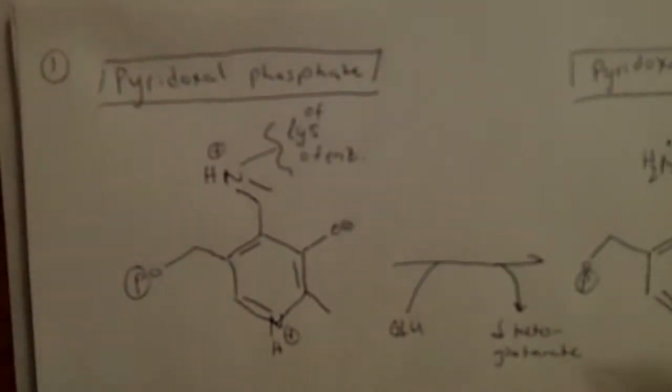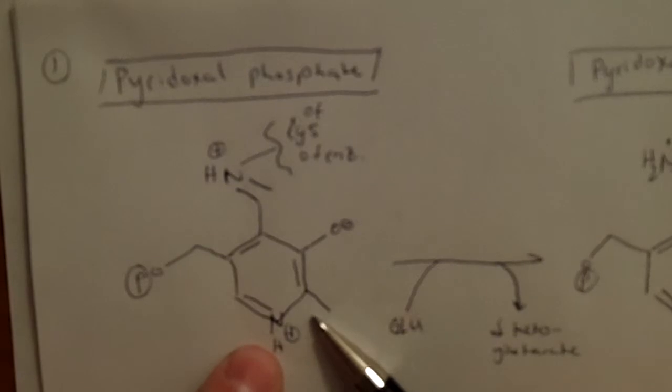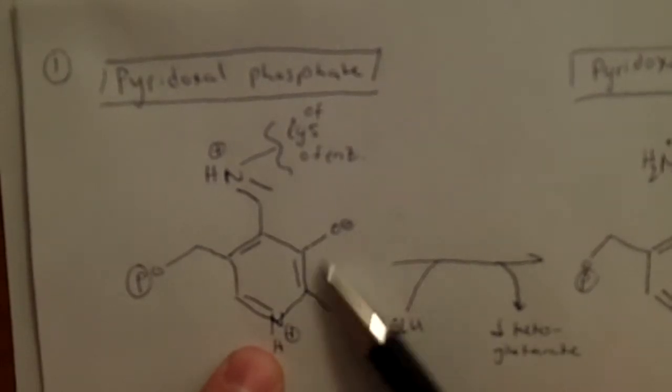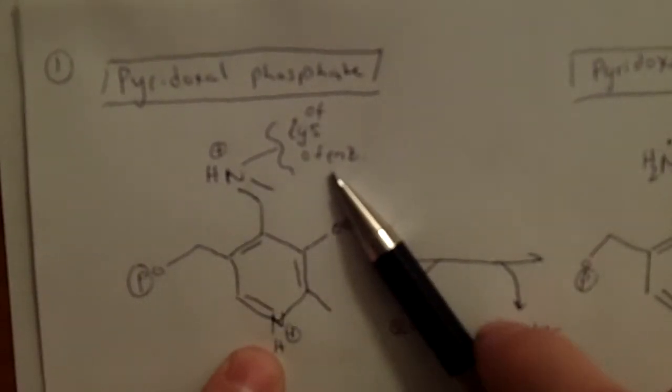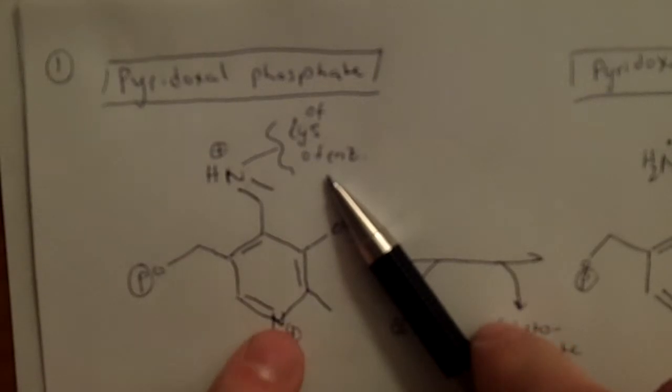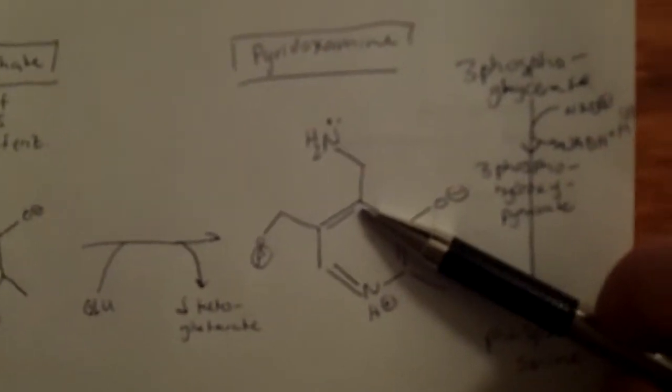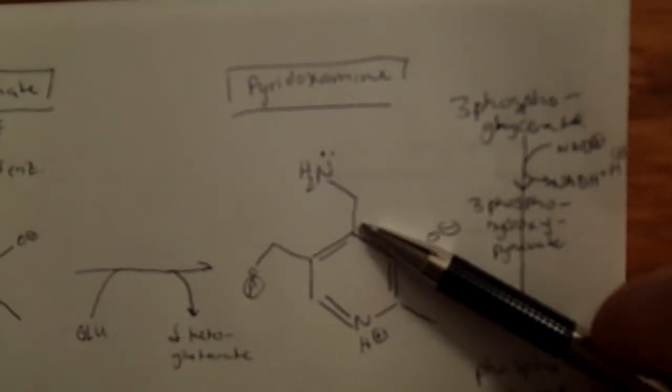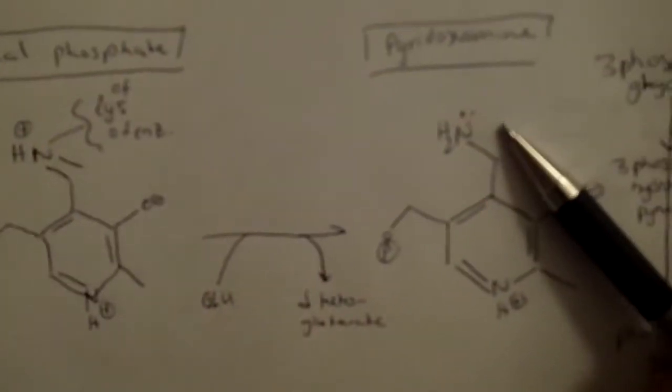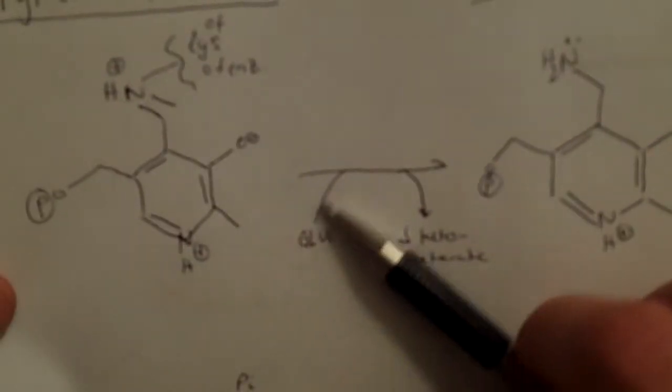The amination is done with pyridoxal phosphate. This is showing the enzyme-linked form of it, but what's actually going to transport and transduce the amine on is this form, which is pyridoxamine. This amine came from a glutamate, and the resulting form from a deaminated glutamate is alpha-ketoglutarate.